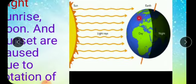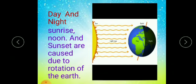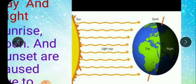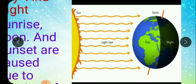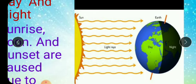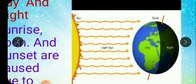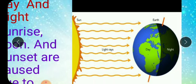Day and night on the earth occur because of the rotation of the earth. Rotation of earth means when earth moves around its own axis — as you can see here, earth's axis is inclined and tilted. While rotating, the part of the earth which is close to the sun has day, and the part which is away from the sunlight will have night.